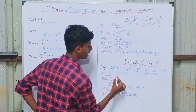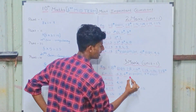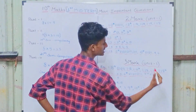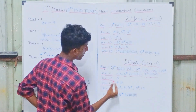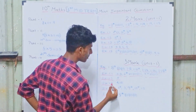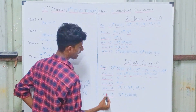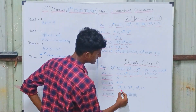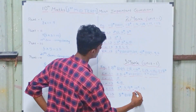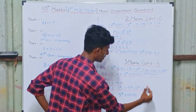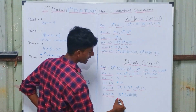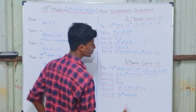Exercise 1.1: 4th sum, 5th sum, 6th sum — both subdivisions — 7th sum, both subdivisions. Exercise 1.2: 5th sum important. Exercise 1.3: 4th sum and 10th sum. Exercise 1.4: 2nd sum (very very important), 3rd sum, 9th sum (very very important), 10th sum (very very important), and 12th sum important. Exercise 1.5: 8th sum — both subdivisions — very important.